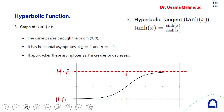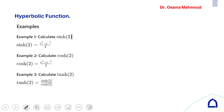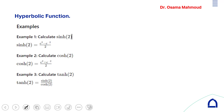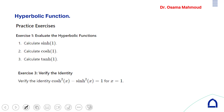Unlike sine and cosine which are periodic functions with period 2π, tanh(x) is not a periodic function. The domain is minus infinity to positive infinity and the range of cosh is between minus 1 and positive 1. For the example, to find sinh(2) just substitute x = 2; to find cosh(2) substitute x = 2.